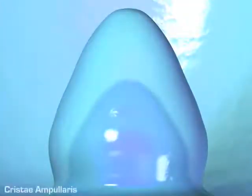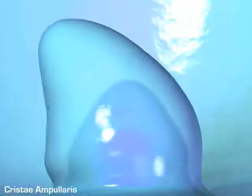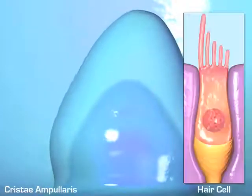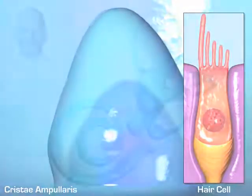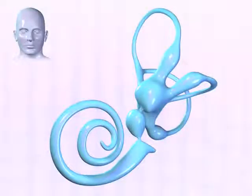Within the ampulla is a sensory organ, the cristae ampullaris. When endolymph moves, it pushes the gelatinous cupula that covers the cristae ampullaris, causing embedded hair cells to bend and send nerve impulses to the brain.